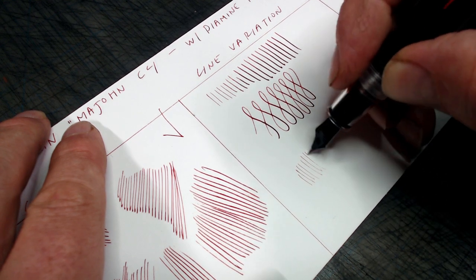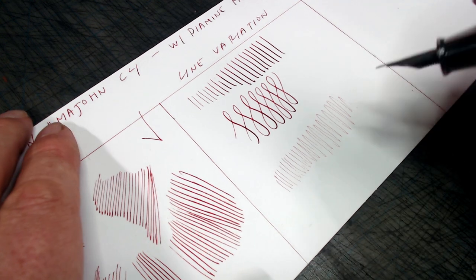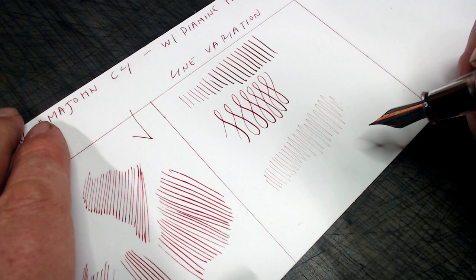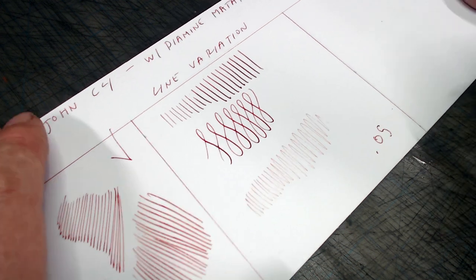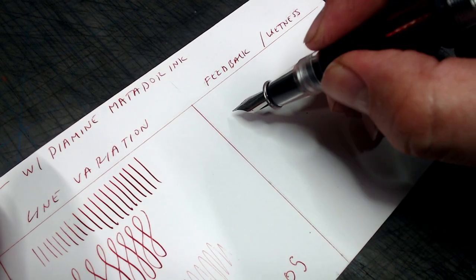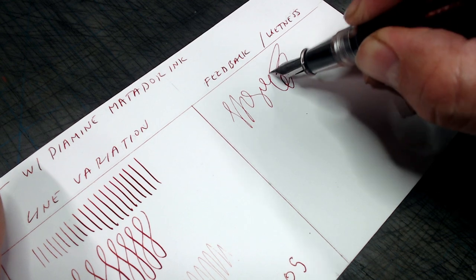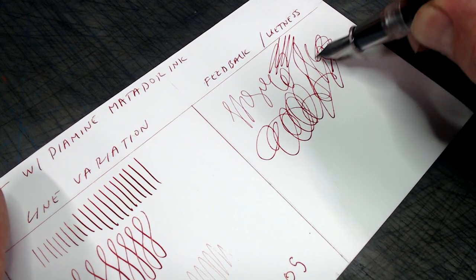In the line variation test, this pen showed itself to have negligible flexibility. You can tease out a slightly wider line with pressure, but that might be the result of the tip digging into the paper rather than the spreading of the tines. I'm going to rank this as a nail, a 0.5 on my 1-10 flexibility scale. It does reverse write, however, putting down a super wispy, consistent, extra, extra, extra fine line.